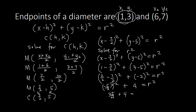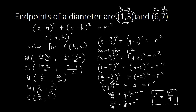To simplify, we convert 4 to a fraction with denominator 4, giving us 16/4. So we have 25/4 plus 16/4 equals r squared, which means r squared equals 41/4. We now replace the r squared in our standard equation, giving us the final answer: x minus 7/2, squared, plus y minus 5, squared, equals 41/4.